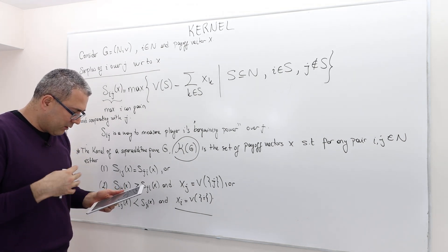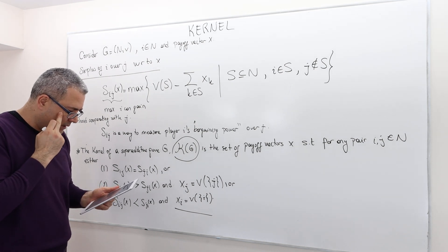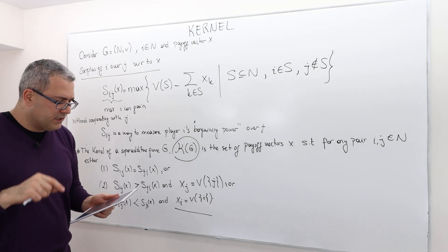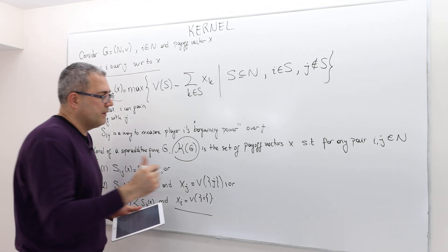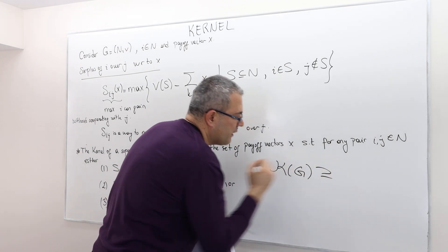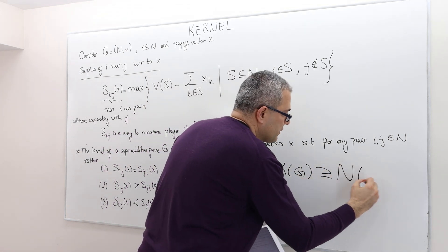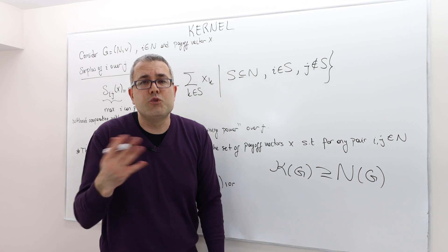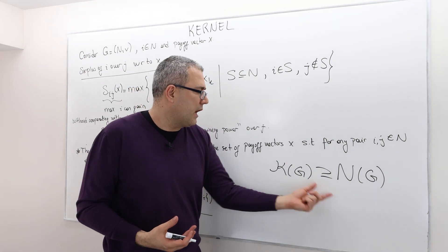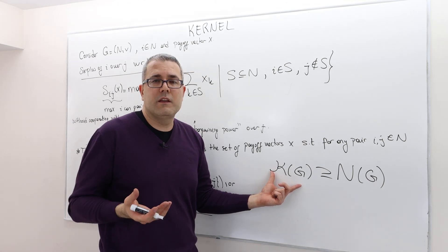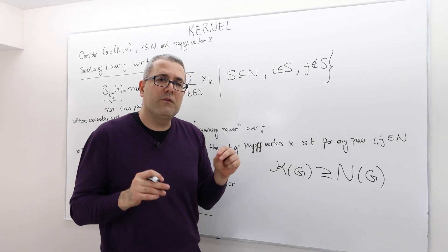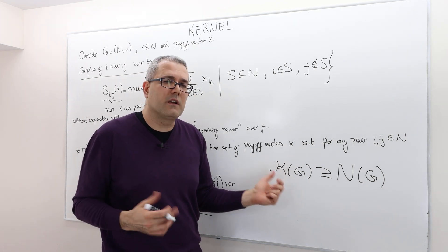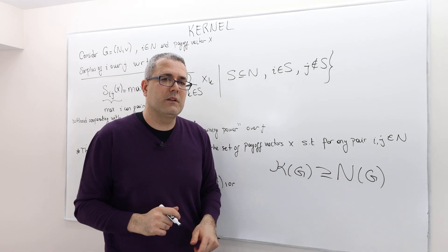The kernel contains all outcome vectors where no player has bargaining power over another. In terms of existence, the kernel always contains the nucleolus, and therefore it is not empty. The kernel of game G is a superset of the nucleolus of game G. Every super-additive game always has a nucleolus, and so every super-additive game has a kernel. Finding kernels is easier than finding the nucleolus.